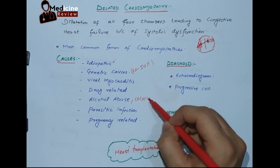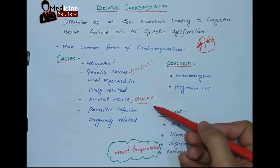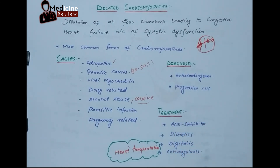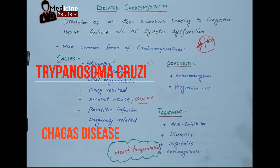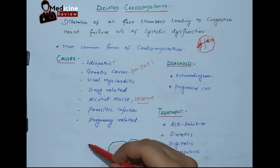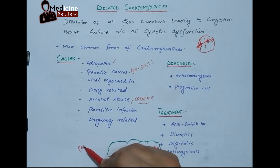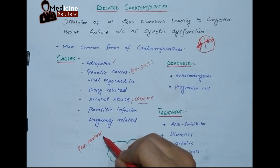Alcohol abuse can also lead to dilated cardiomyopathy, specifically chronic alcohol abuse. Another cause is chronic cocaine use. If a young patient presents with heart disease, specifically MI, never forget to take a history of cocaine, because cocaine can severely damage the heart. Parasitic infection — specifically Trypanosoma cruzi — causes Chagas disease, which is another cause.